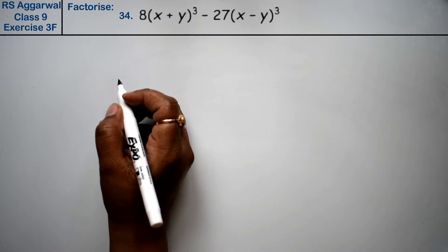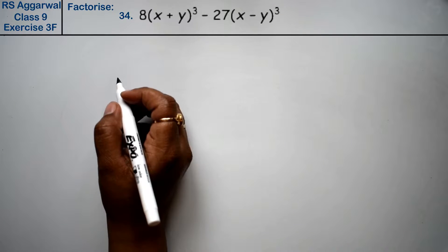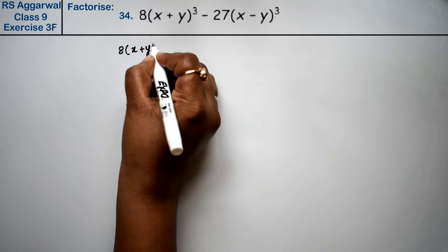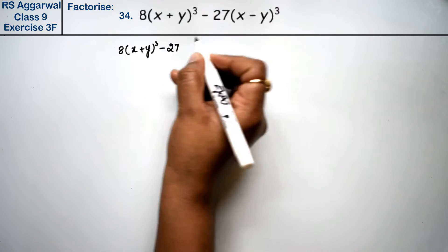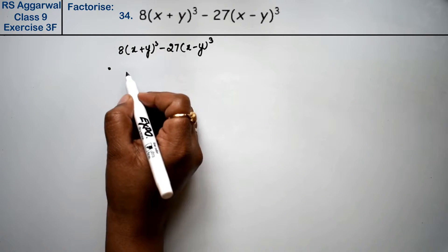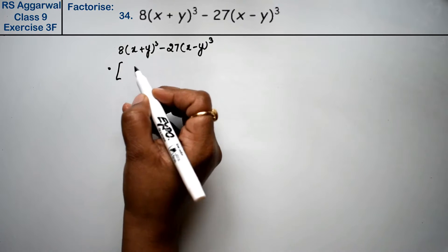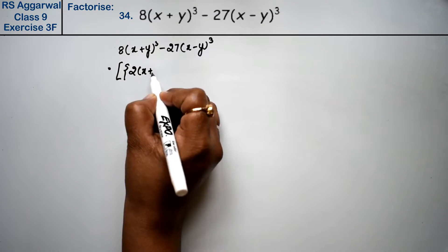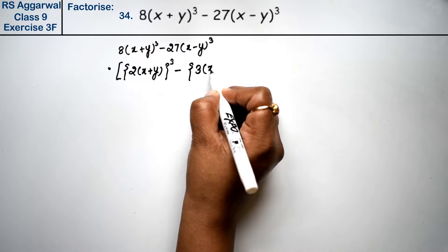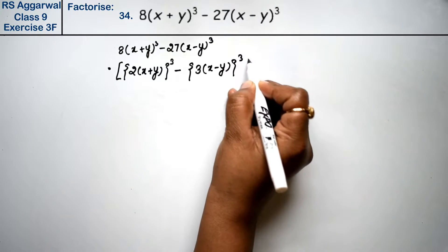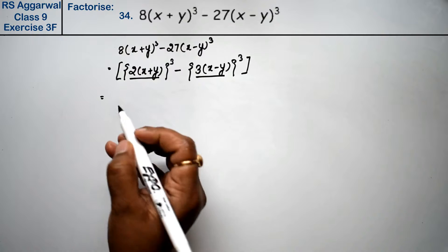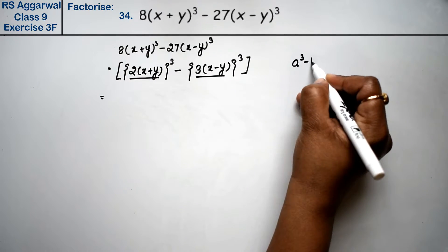Let's do question number 34 of Exercise 3f — factorization of polynomials. Question number 34 is 8(x+y)³ minus 27(x-y)³. Now, we can write 8 as 2³, so the expression becomes [2(x+y)]³ minus 27(x-y)³. And 27 is 3³, so it becomes [2(x+y)]³ minus [3(x-y)]³. This is our full 'a' and this is our full 'b'.